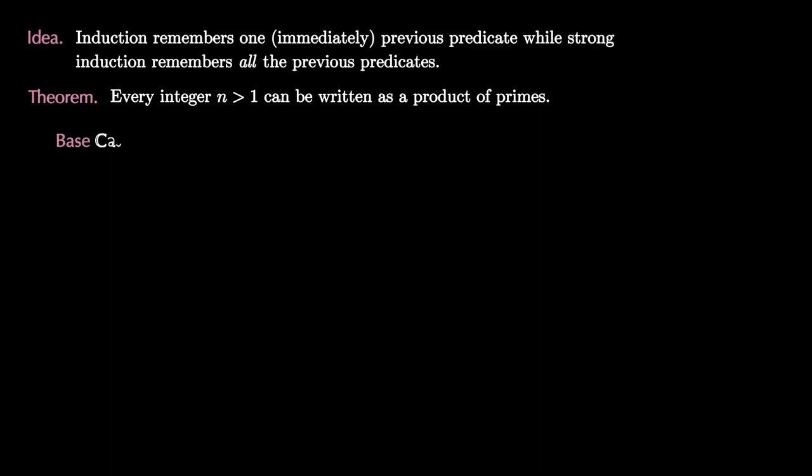These examples inform our general strategy for proof by strong induction. For our base case, we let n equal 2, which is prime, so 2 equals 2 shows that 2 can be written as the product of one prime.